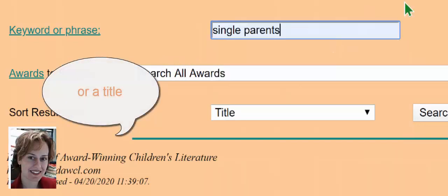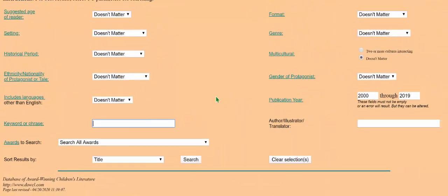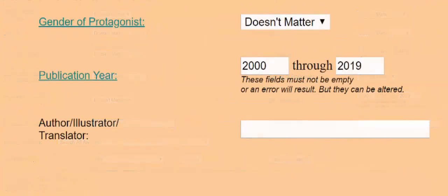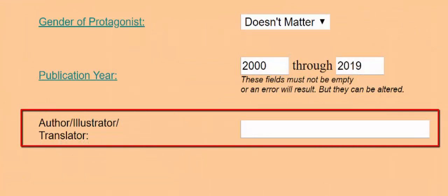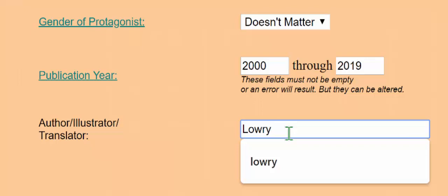You can also use the keyword box to search a specific title to see if it has won an award. It is also used to find out which books an author or illustrator has won among the awards in the database. If we wanted to know which books by Lois Lowry have been recognized, type Lowry in the author-illustrator text box.